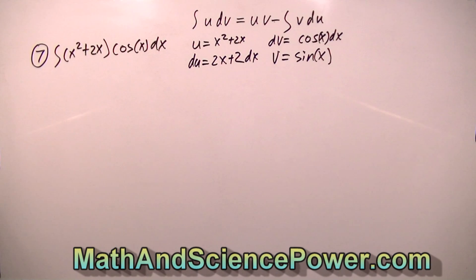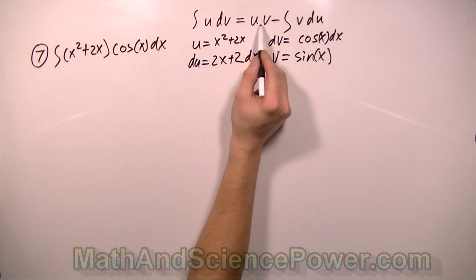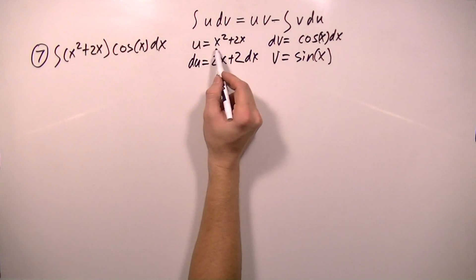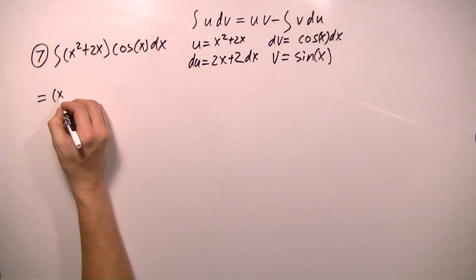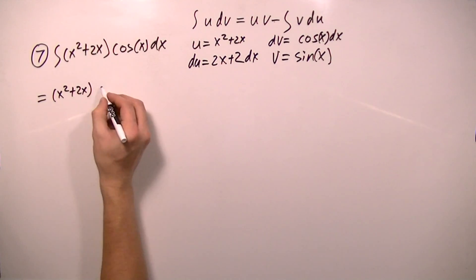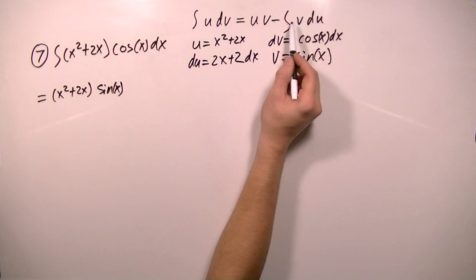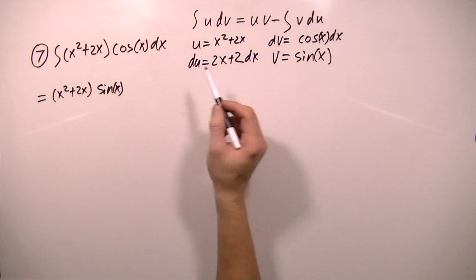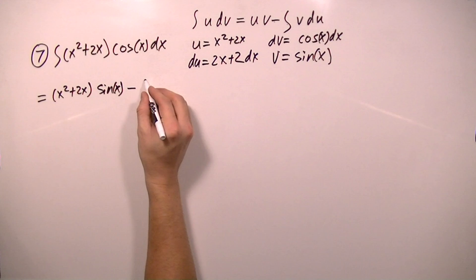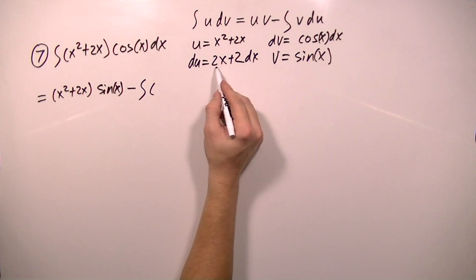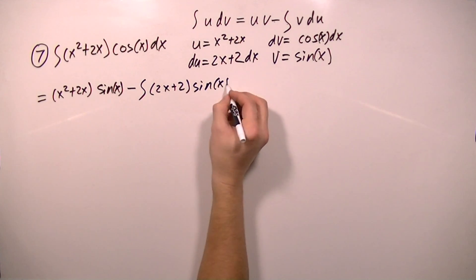Welcome back to MathAndSciencePower.com. Okay, let's plug in our values. So this integral, u dv, will equal u times v. So u times v will be this quantity times this quantity. So that's going to be equal to quantity x squared plus 2x times sine x. And then I'll have to subtract the integral of v times du. So v is sine x and du is 2x plus 2 dx. So I'm going to subtract the integral of, I'm going to write this quantity first, 2x plus 2 times sine x dx.